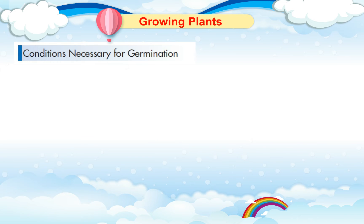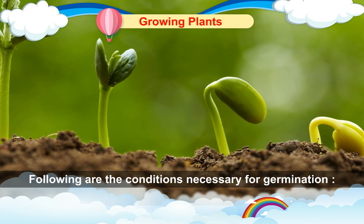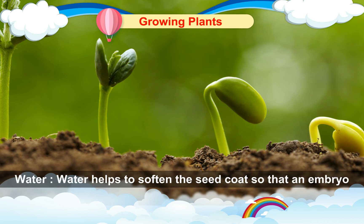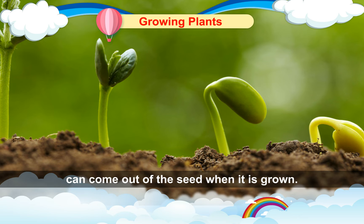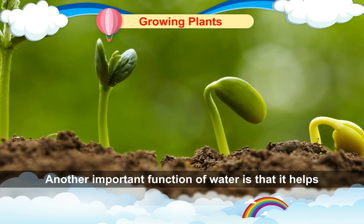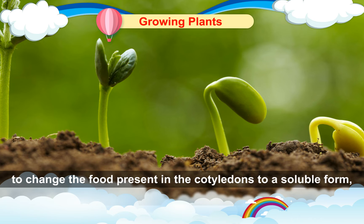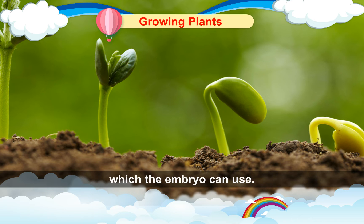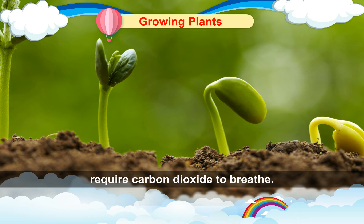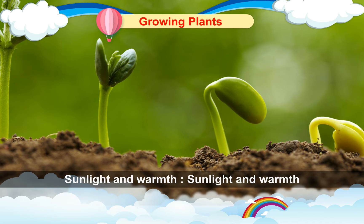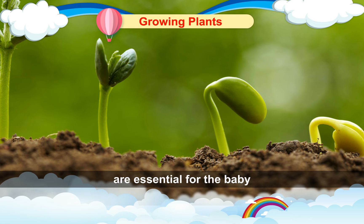Conditions necessary for germination. Water helps to soften the seed coat so that the embryo can come out of the seed when it is grown. Another important function of water is that it helps to change the food present in the cotyledon into a soluble form which the embryo can use. Air is essential as seeds and plants require carbon dioxide to breathe. Sunlight and warmth are essential for the baby plant to become active and grow.